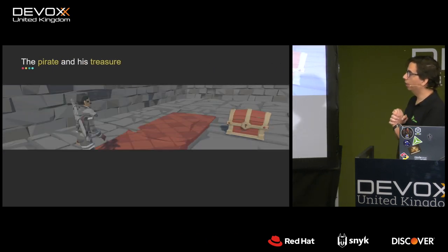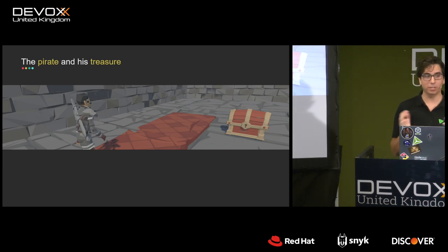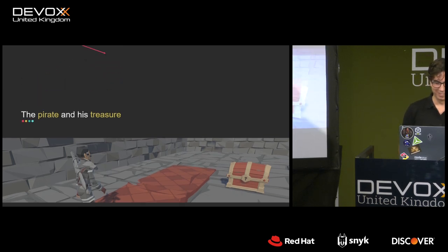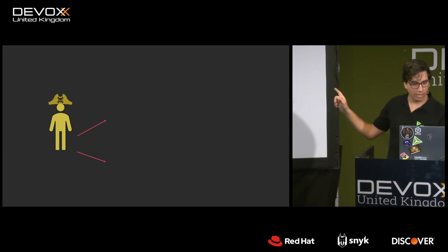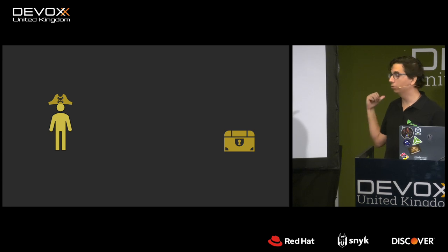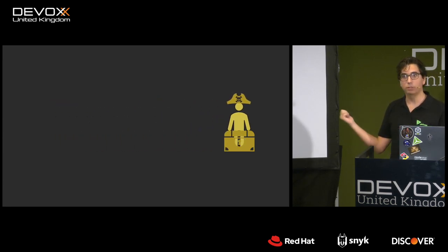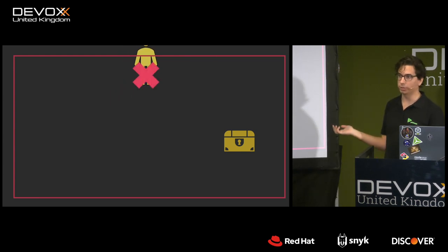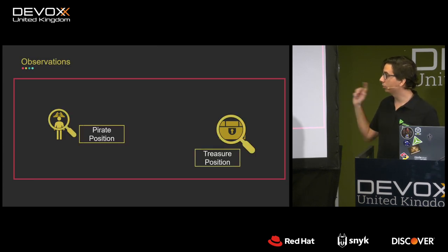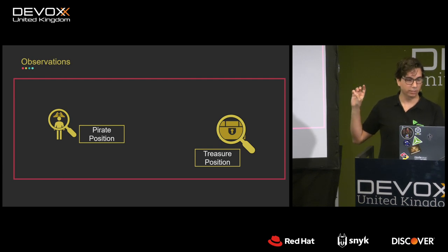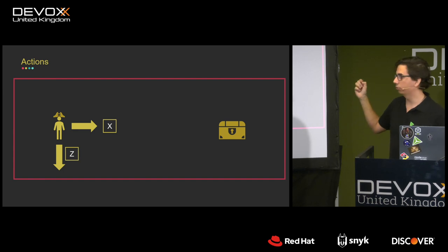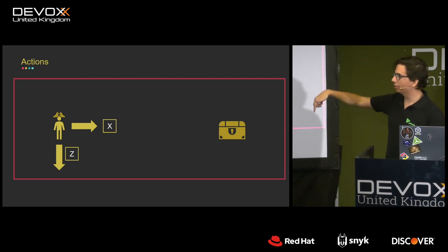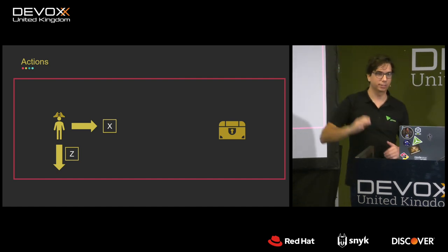Alright, let's get started. The first example is the pirate and his treasure — everyone agrees pirates like treasure. We want the pirate to go to the treasure. When he reaches it, he gets a reward of one. If he reaches the walls, we punish him with minus one. The observations are the pirate's position and the treasure's position — three float numbers each, six total. We request two action numbers from the Python trainer: one for the X-axis and one for the Z-axis (which in Unity is the forward axis, since Y is up).